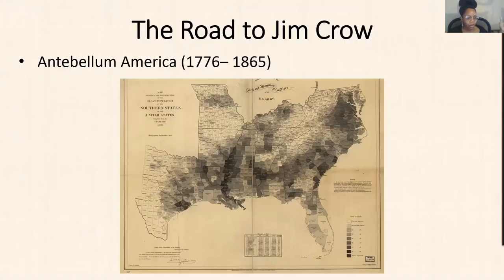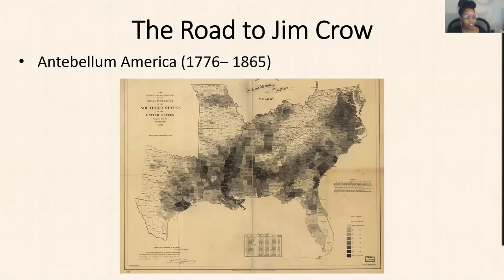The discussion begins with the road to Jim Crow. Jim Crow were laws at the state and local level that enforced racial segregation in the southern United States following the Civil War. The term 'antebellum America' is used here because the anti-Black propaganda and stereotypes of Jim Crow didn't stay in the south — they ultimately influenced the entire United States and even outside the country's borders.